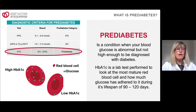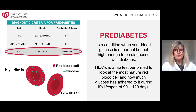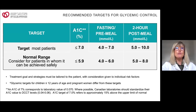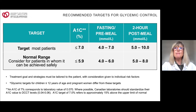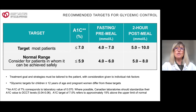A hemoglobin A1C of 6.5% or greater is considered diabetic. Once diagnosed, it's important to maintain a hemoglobin A1C of less than 7% to reduce the risk of complications. The target for diabetic patients is under 7%, which corresponds to a finger-prick blood sugar of 4 to 7 before eating, and 5 to 10 two hours after. For non-diabetic persons, the hemoglobin A1C is under 5.9%, corresponding to a fasting blood sugar of 4 to 6, and 5 to 8 two hours later.